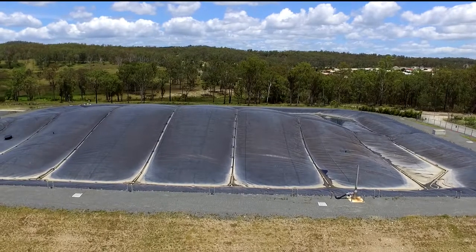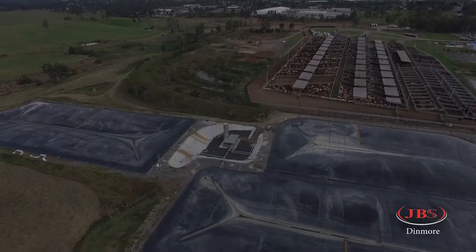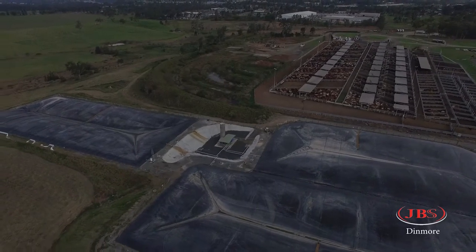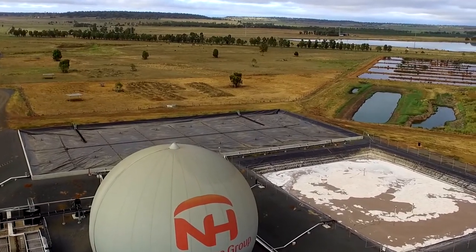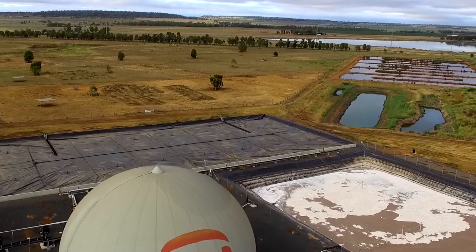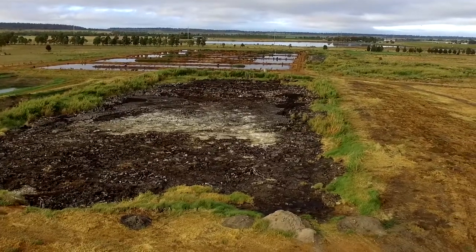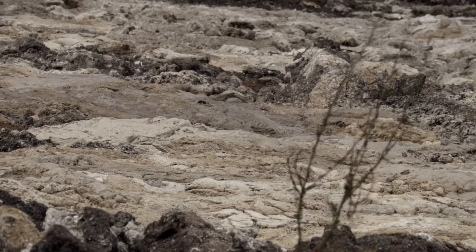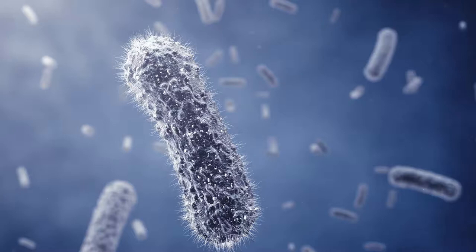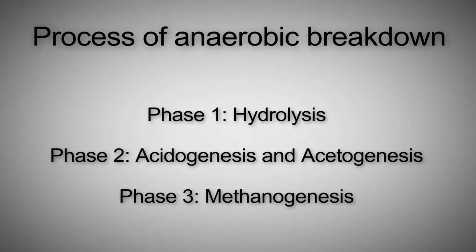Anaerobic ponds play an important role in the treatment of meat processing wastewater. Their key function is to reduce the level of organic contaminants and, to a lesser extent, oil and grease in large volumes of wastewater. They have little effect on the removal of nutrients such as nitrogen and phosphorus or on pathogen numbers. Anaerobic ponds are living ecosystems that contain a complex mix of bacteria that break down organic substances in the wastewater from meat processing plants. This occurs in a three stage process.